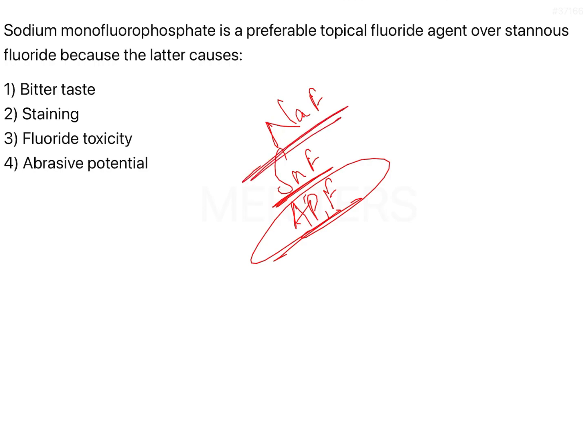Sodium fluoride is basically the most commonly used agent in all other topical fluoride preparations such as varnish and toothpaste — all of them have sodium monofluorophosphate. Sodium fluoride is the one agent used as the fluoride agent because it is easily available, easy to make, easy to procure, and it has a sustained effect. So it is useful.